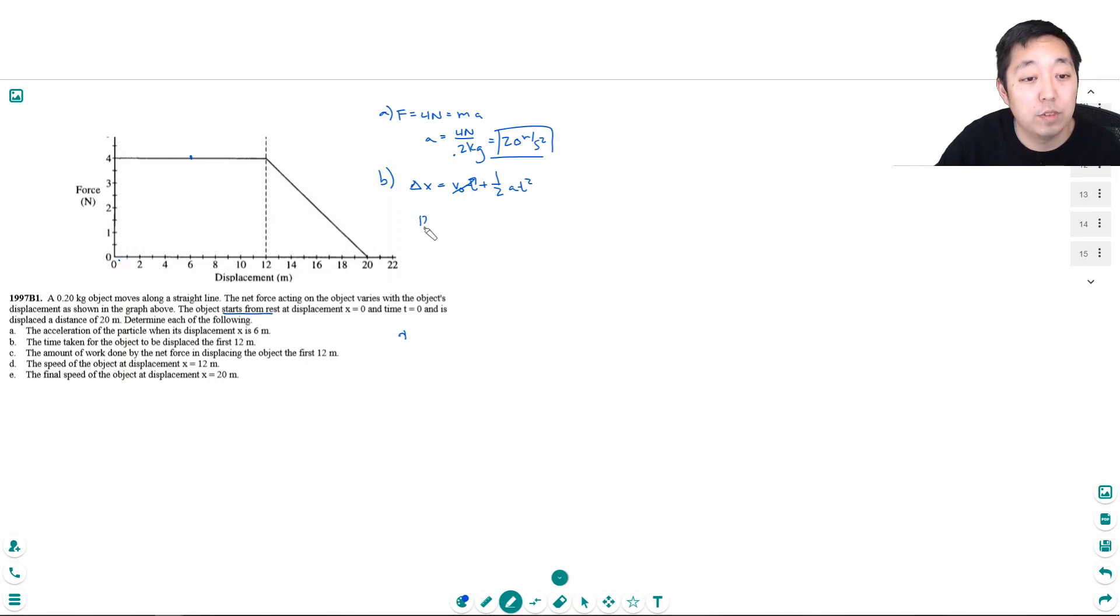So its delta x is 12 meters equals 1 half times 20 meters per second squared times t squared. So this is 10. This is 12 divided by 10. So t squared is equal to 12 divided by 10, which is equal to 1.2. So t is equal to the square root of 1.2, which is 1.095 seconds. Okay, that's B.